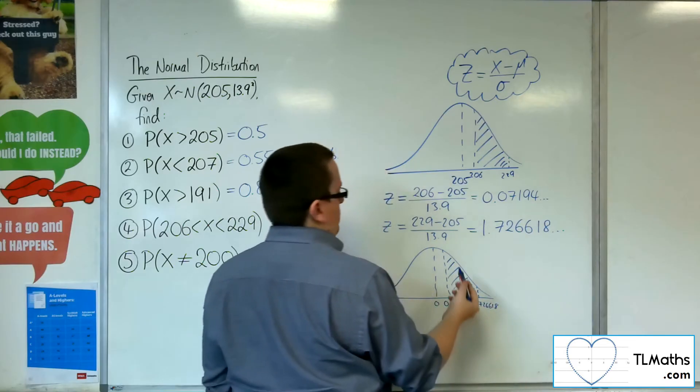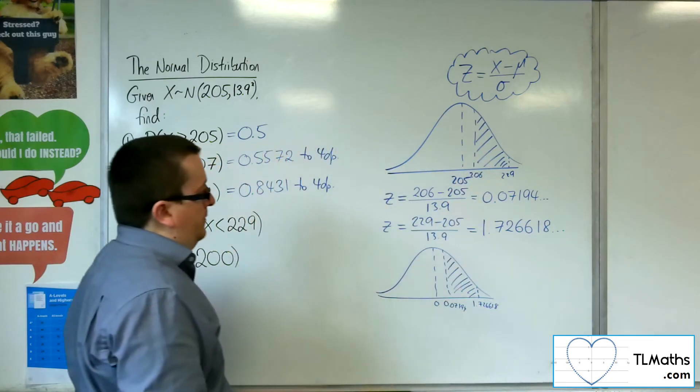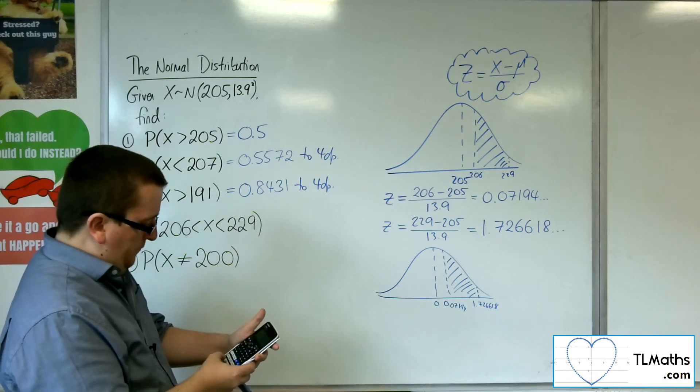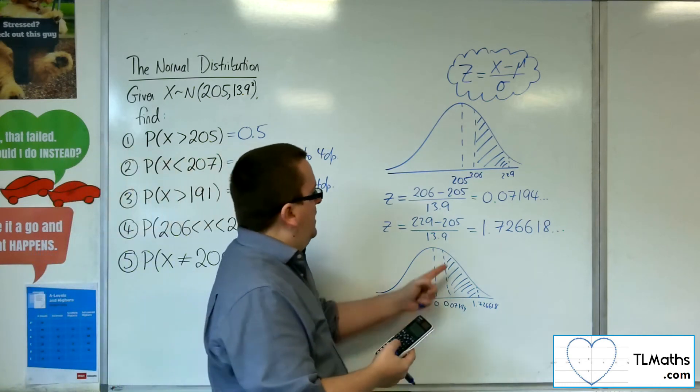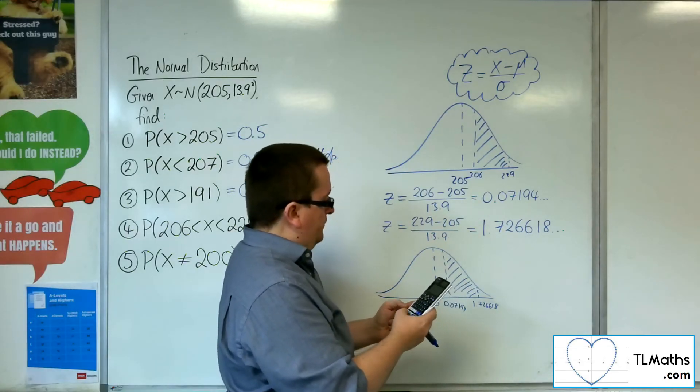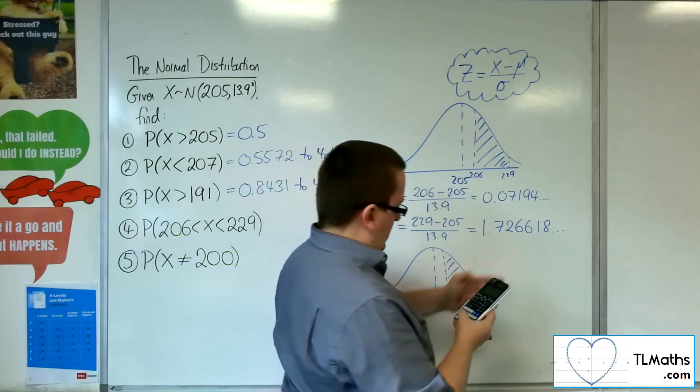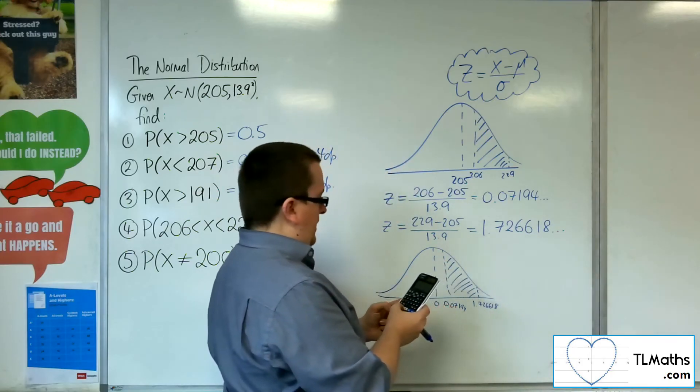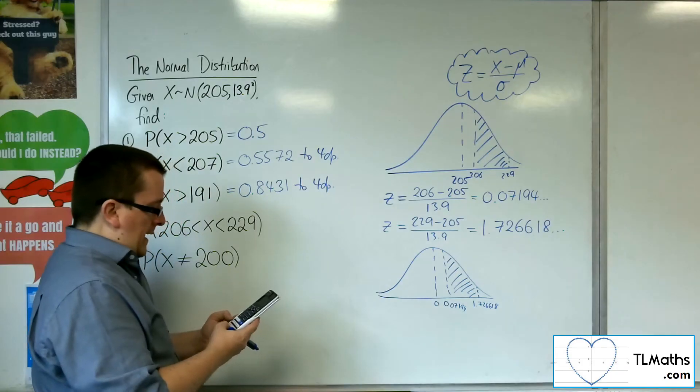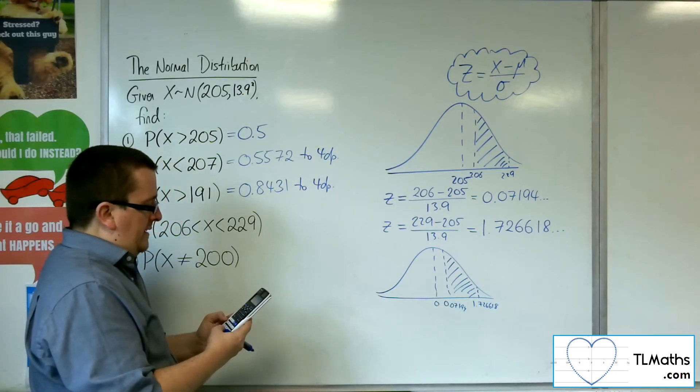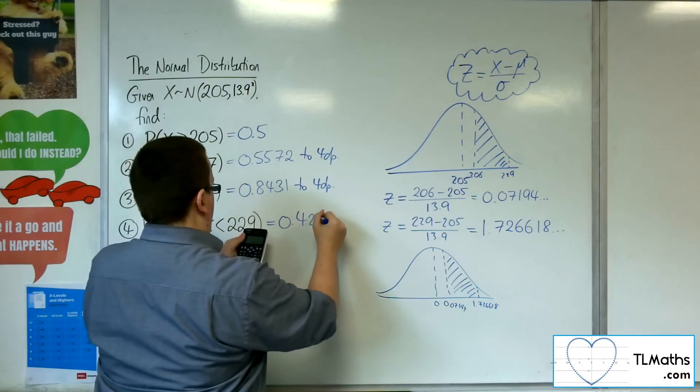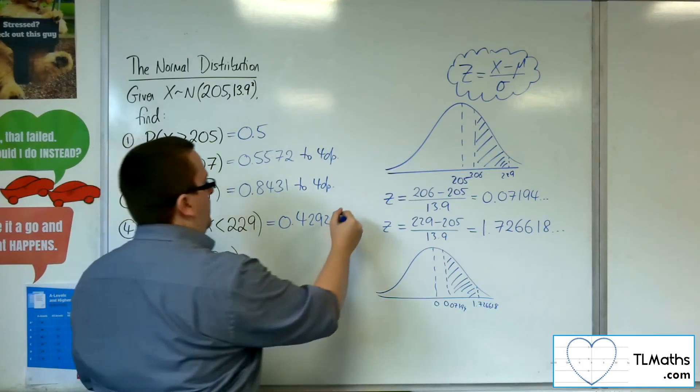So on my standard normal curve, there's 0, there's this 0.07194, and there's this 1.726618. I want that area. That area is the same as that area there. So on my calculator, going into normal CD, the lower value is going to be this 0.07194, and the upper is this 1.726618. The sigma is 1, and the mean is 0, and we get 0.4292 to four decimal places.